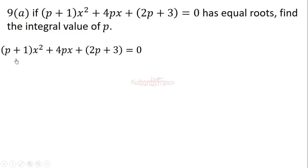If you compare this to the general quadratic equation, we have a (the coefficient of x²) is p + 1, b (the coefficient of x) is 4p, and the constant term c is 2p + 3.